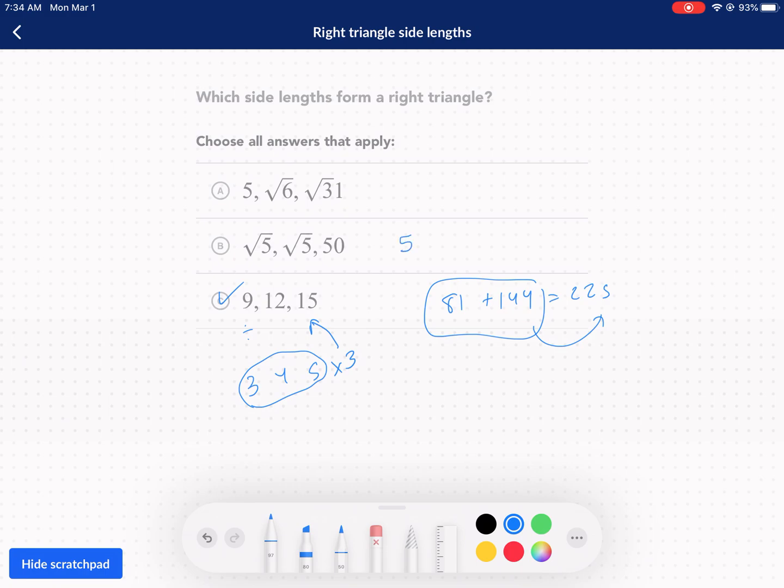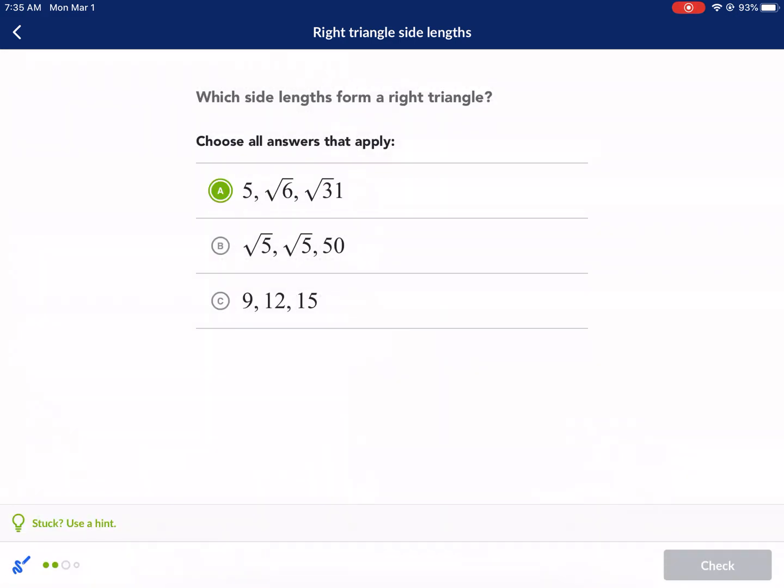If you square the square root of five, you get five. If you square the square root of five, let me just write this out so you can see it. These two legs squared, does it equal 50? And it does not. That's 10 is not equal to 50. So B is not an option. And then we have 25 plus six is equal to 31. This squared equals 31. This squared equals six. And that is true. So we have A and C this time.